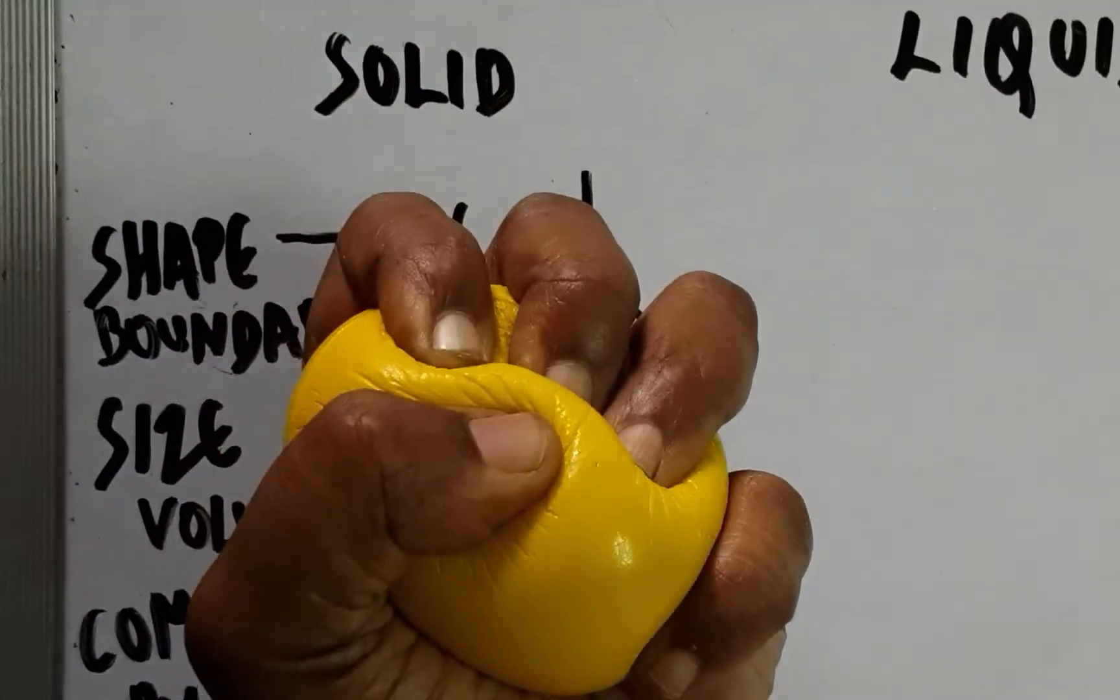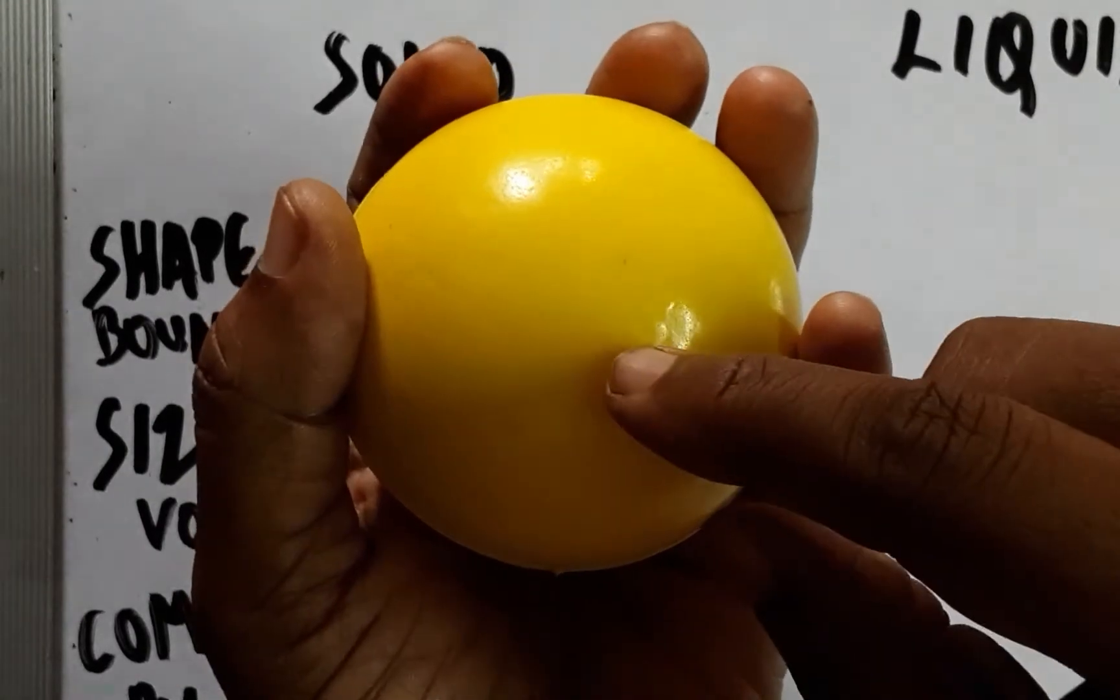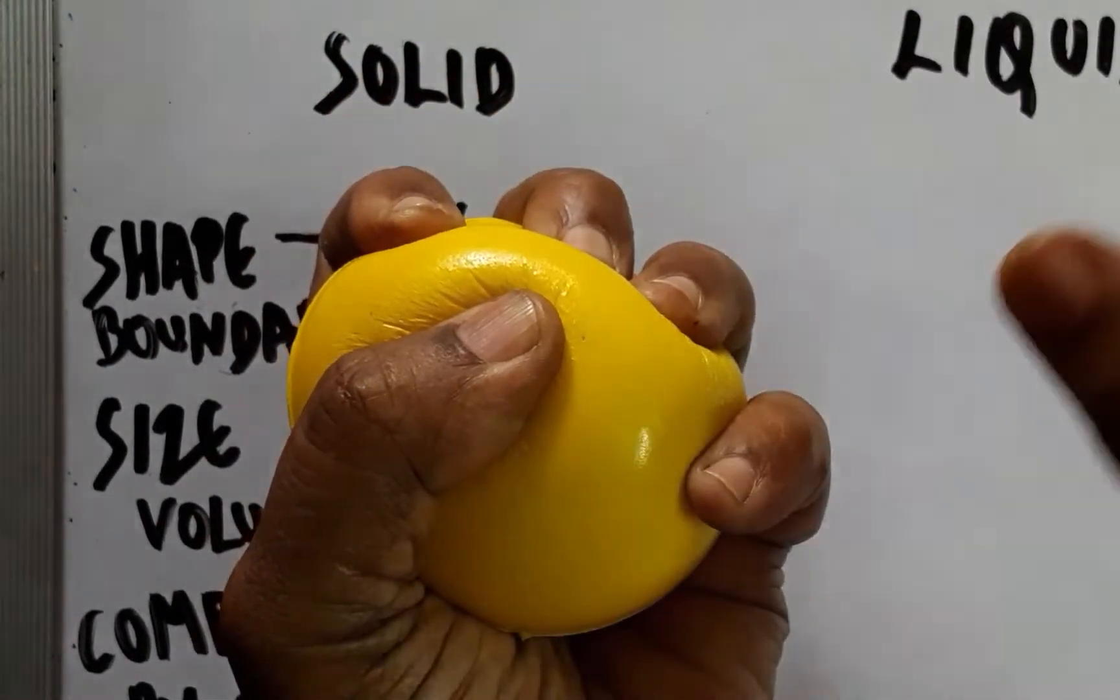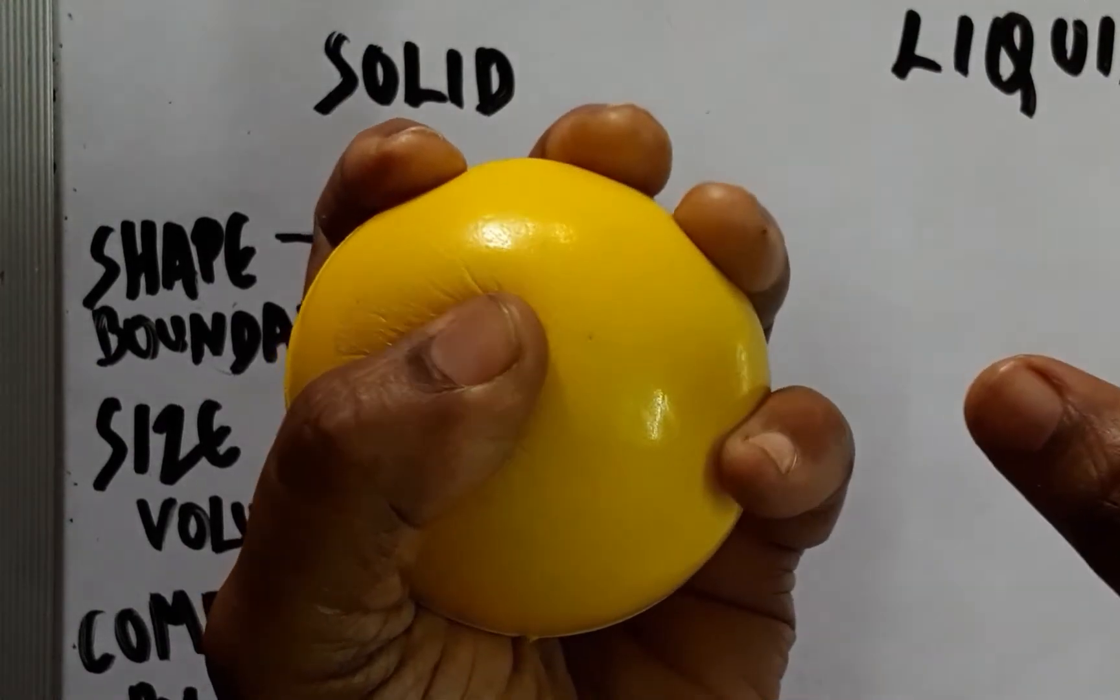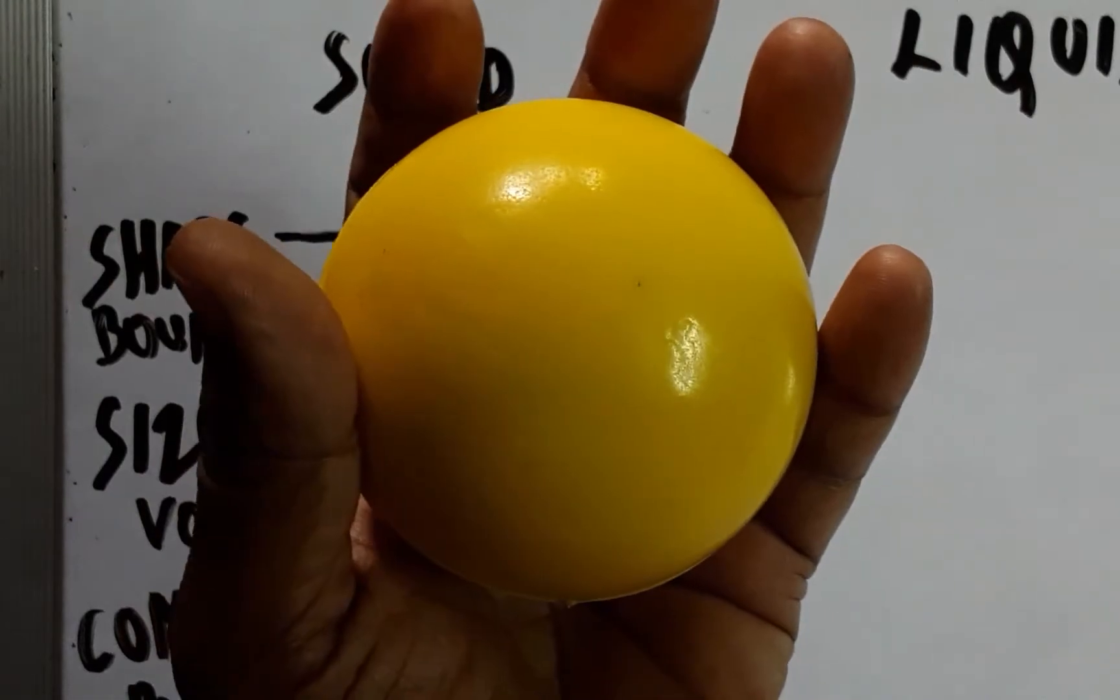And this sponge ball, when compressed, has intermolecular particles with a lot of air existing. And when we press the ball, the air is being pushed out and when released the air fills up the interstitial gaps.